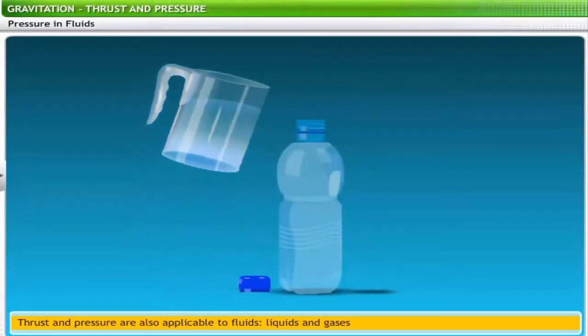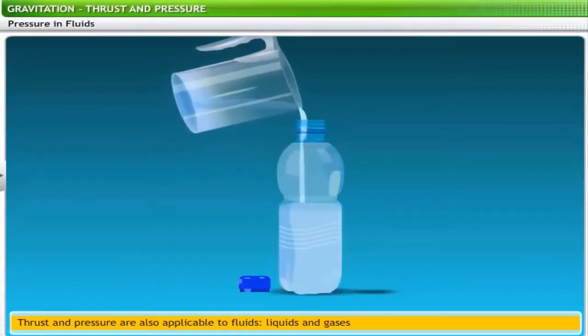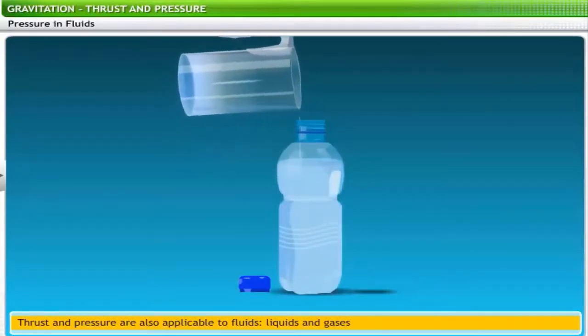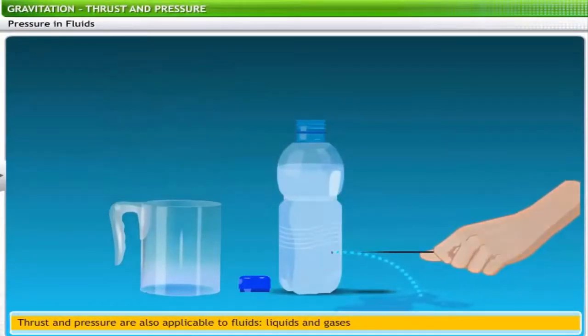Fill the plastic bottle completely with water. Then, make a small hole in the lower half of the wall of the bottle. You will see that the water gushes out through the hole with considerable force. This force is due to the pressure of the fluid at that point.